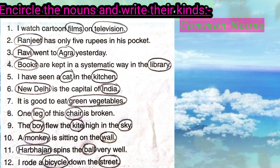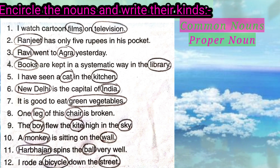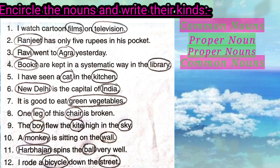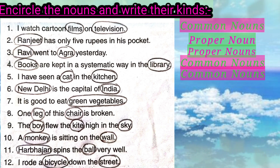Next: 'Ranjit has only 5 rupees in his pocket.' Ranjit is a proper noun. 'Ravi went to Agra yesterday.' Ravi and Agra are both proper nouns. 'Books are kept in a systematic way in the library.' Library and books are common nouns. 'I have seen a cat in the kitchen.' Cat and kitchen are common nouns. 'New Delhi is the capital of India.' New Delhi and India are proper nouns.